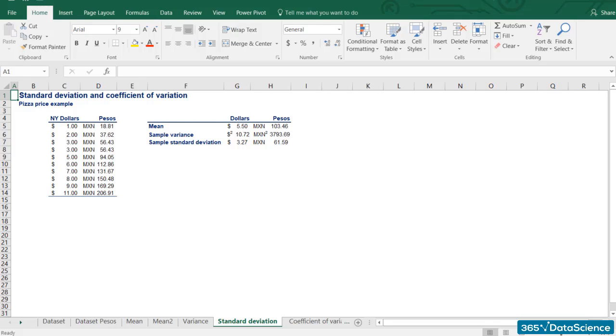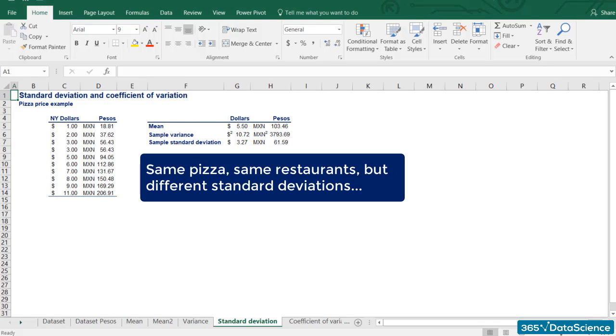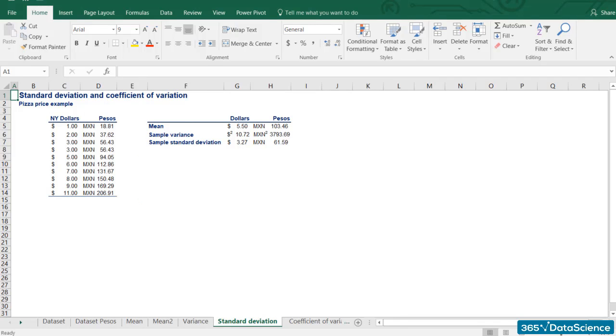Second, we got standard deviations of 3.27 and 61.59 for the same pizza at the same 11 restaurants in New York City. Seems wrong, right? Don't worry. It is time to use our last tool. The coefficient of variation.